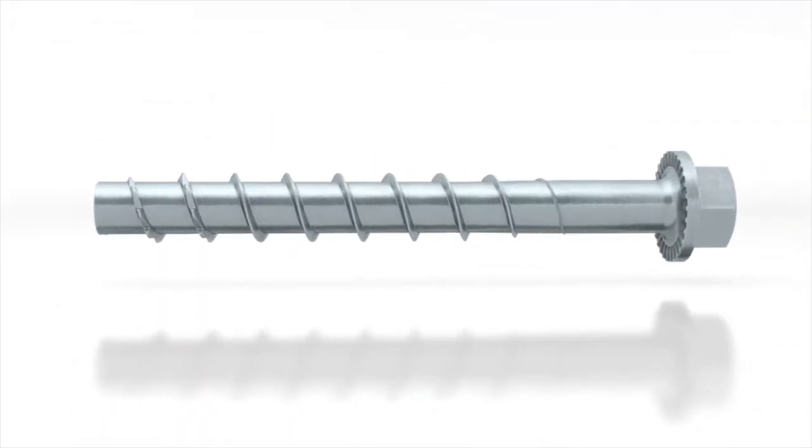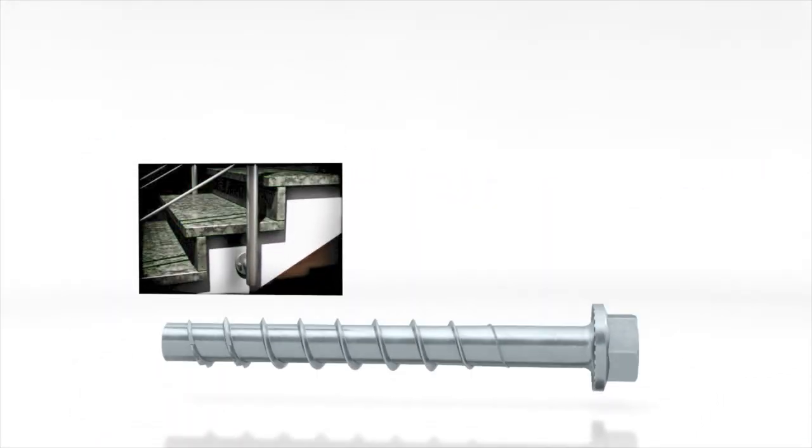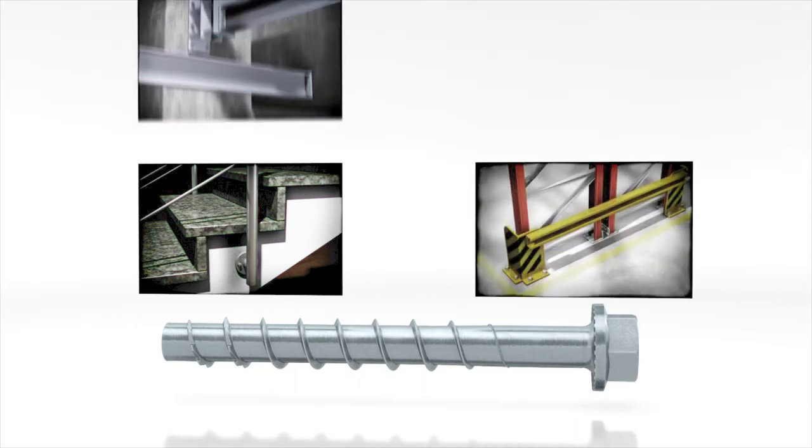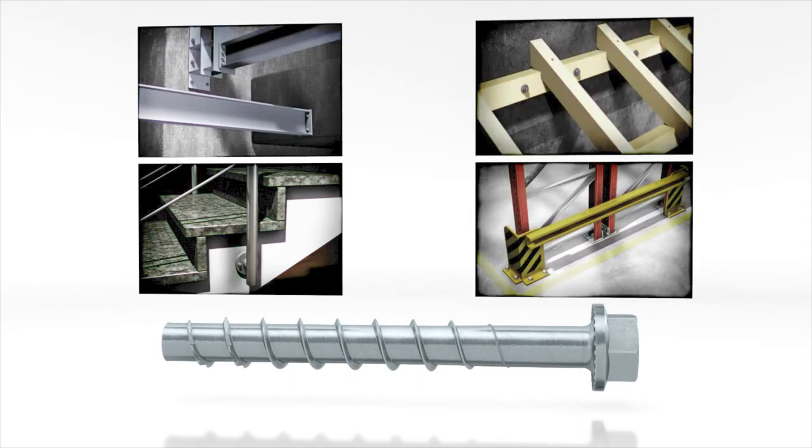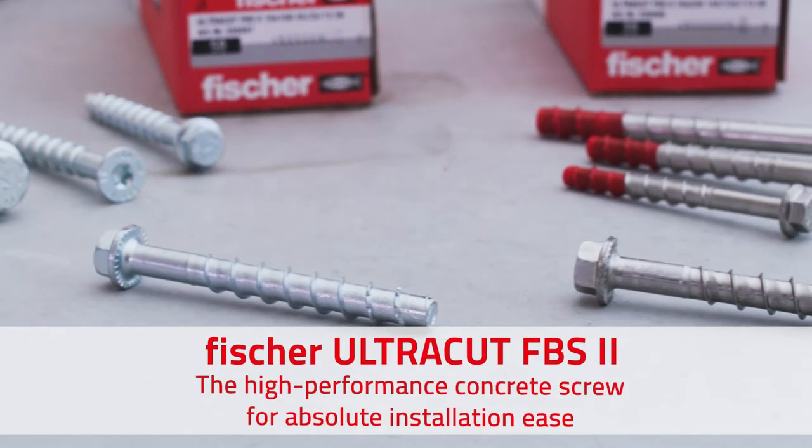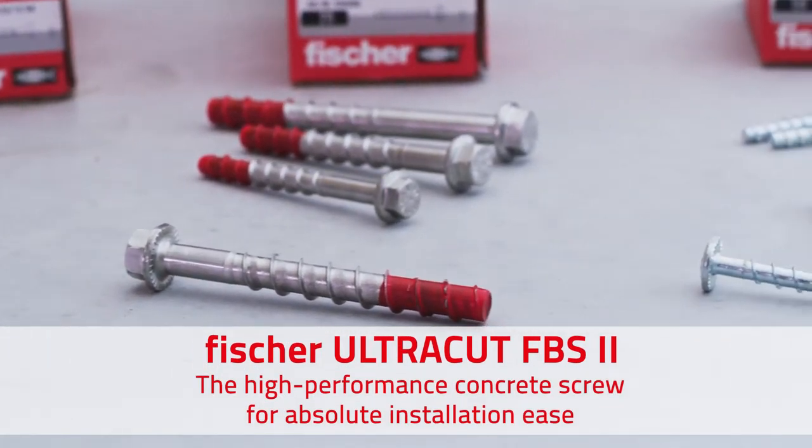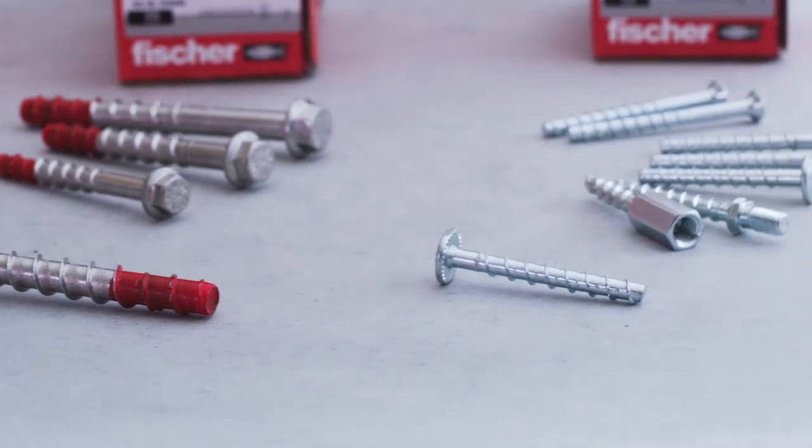Ultracut FBS2 zinc-plated steel. Perfect for railings and ballast aids, shelving systems, brackets, step or beam anchorages. Fischer Ultracut FBS2, the high-performance concrete screw for absolute installation ease.